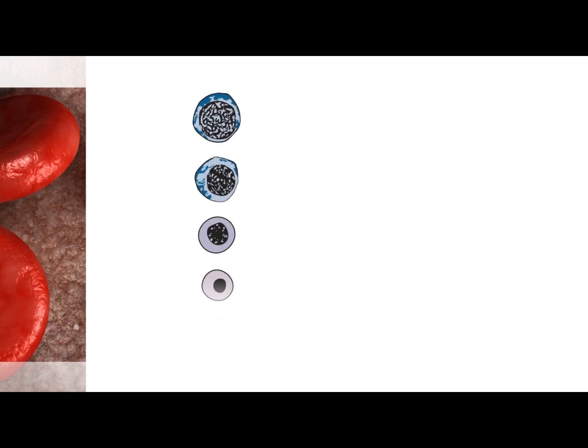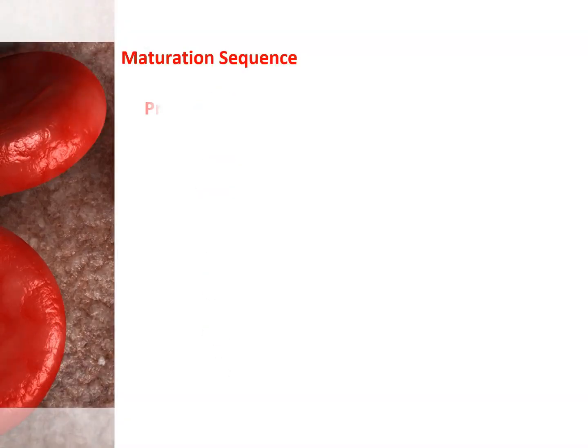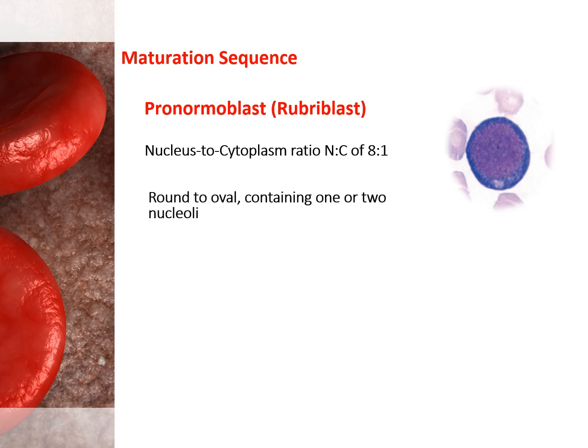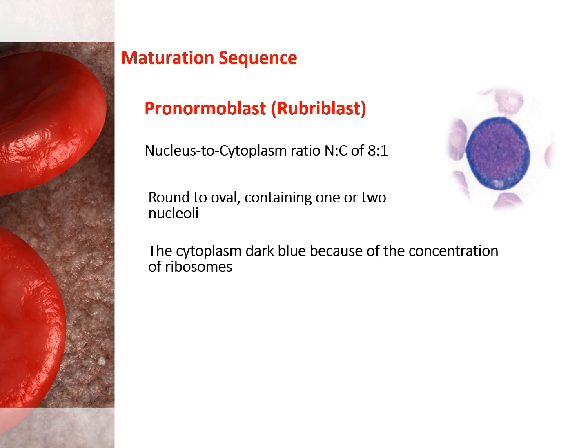The process of cell maturation is a gradual process, with changes in shape and size starting with the pronormoblast. The nucleus takes up much of the cell with a nucleus-to-cytoplasm ratio of 8-to-1. The nucleus is round to oval, containing one or two nucleoli. The cytoplasm is dark blue because of the concentration of ribosomes. The Golgi complex may be visible next to the nucleus as a pale, unstained area. The pronormoblast is present only in the bone marrow.